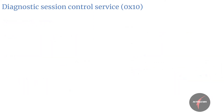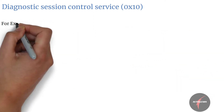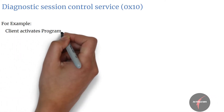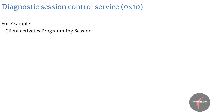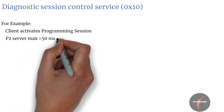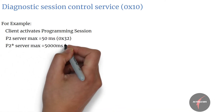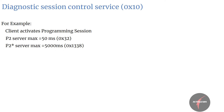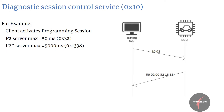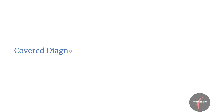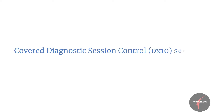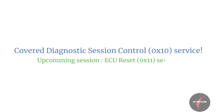Let's understand the request and response with an example. Assuming the client wants to activate the programming session, with P2 server max of 50 ms and P2* server max of 5000 ms, the client would send the request as shown and the server would respond with a positive response as shown. So we've had a detailed look into Diagnostic Session Control. In the upcoming session we will have a look into the ECU Reset service. Thank you.